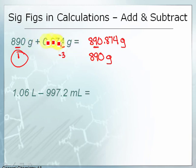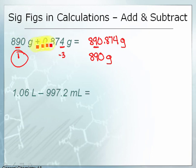Notice it didn't change. We've added something smaller than the level of uncertainty we have in this number, so it doesn't change our number there.